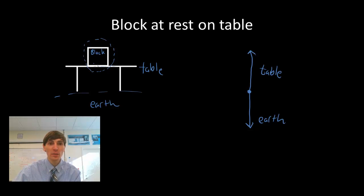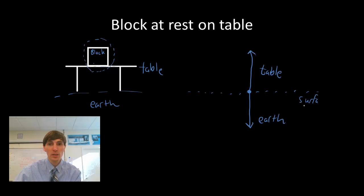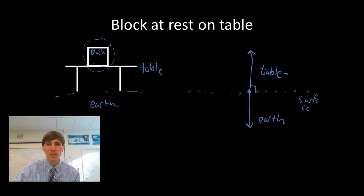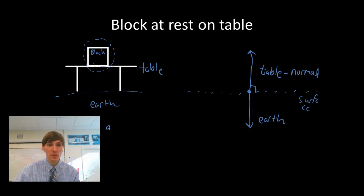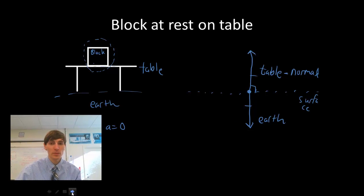If I were to draw a dotted line for my surface, that push at the surface is going to be acting perpendicular to the surface. We call this force that acts perpendicular to the surface the normal force — 'normal' is just a geometry word for perpendicular. And because the acceleration is zero, the object is not accelerating, so these forces are balanced.